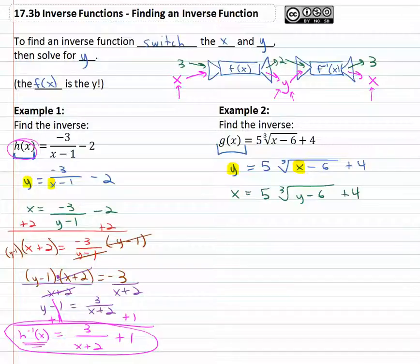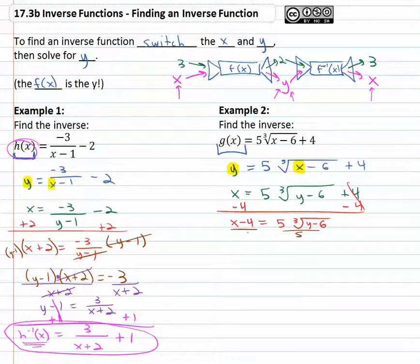Now we just have to solve for y. Subtract four from both sides, x minus four equals five times the cube root of y minus six. Getting that radical alone, remember that from solving radical equations. Dividing both sides by five, we have x minus four over five is equal to the cube root of y minus six. Now that the radical's alone, we can get rid of a third root with its inverse, a third power on both sides. Third power and third roots are opposites. On the right all we have is y minus six.